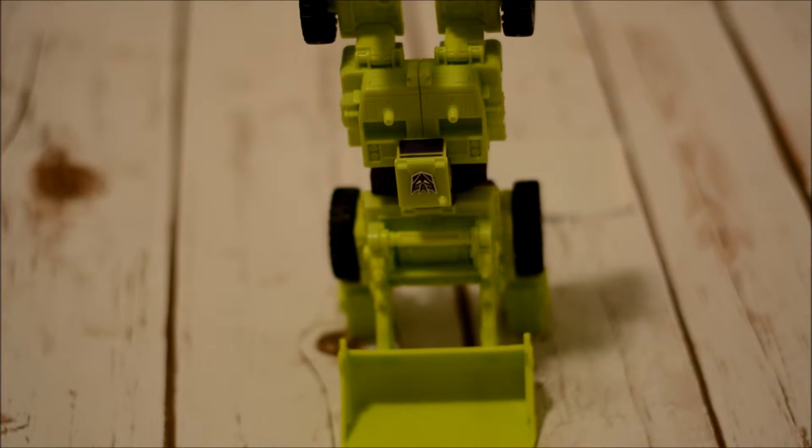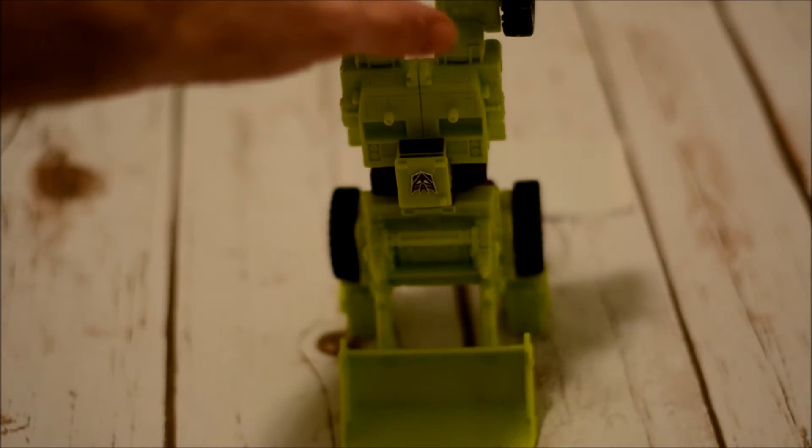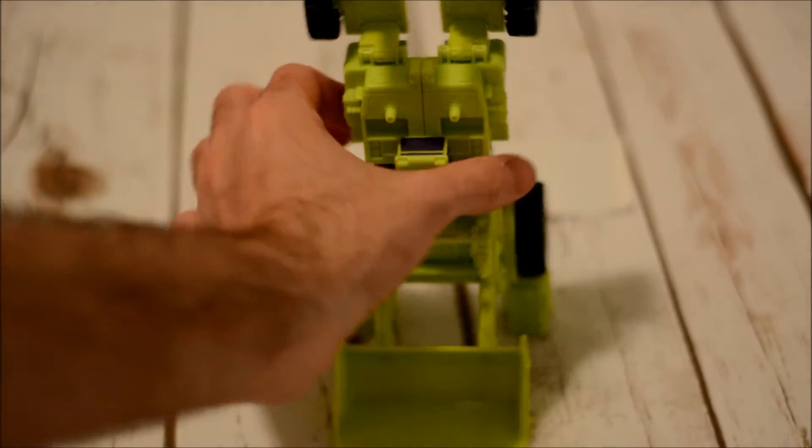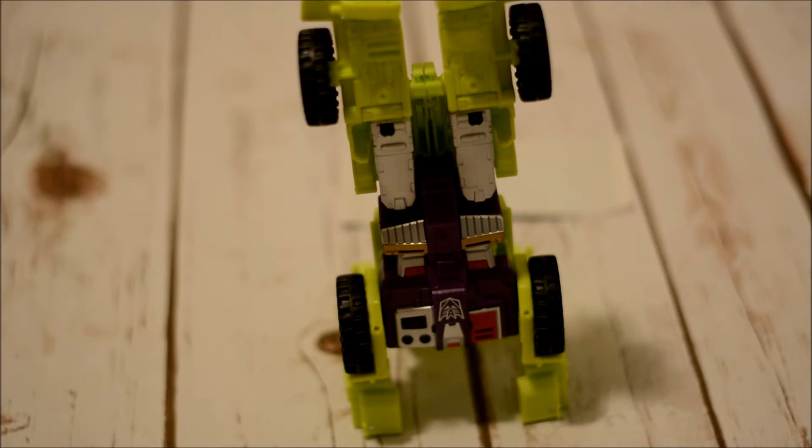So here he is in limb mode. Once again, not super impressive on its own, looks a whole lot better when fully combined with the rest of the Constructicons. Pretty obvious from the back, got a robot doing a handstand, but that's not a concern to me. I'm not looking at Devastator's back.